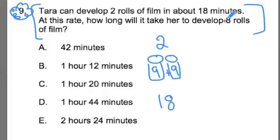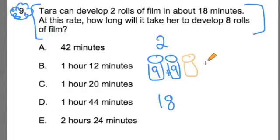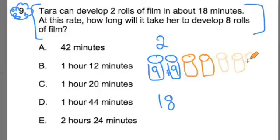Now the second part says how long is it going to take to develop eight rolls of film? Well, I already have two here, so now I'm going to start using the model drawing to help me work through the math behind the problem. I have another couple of rolls — so there's four, five, six, seven, eight. I've got eight rolls of film.